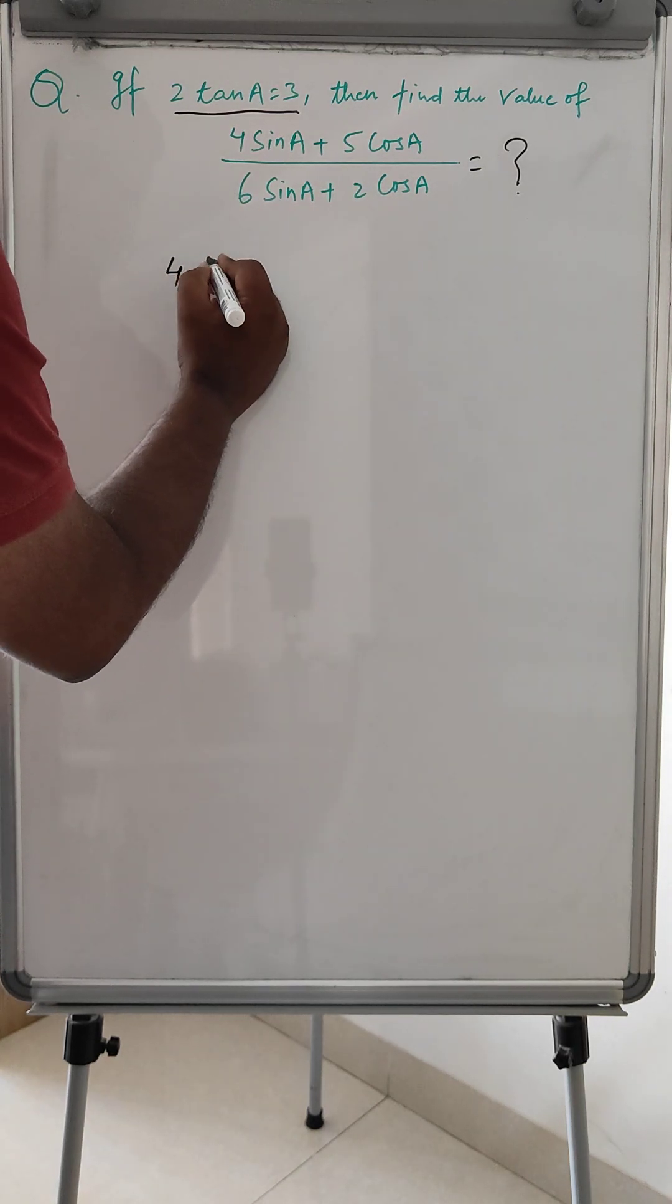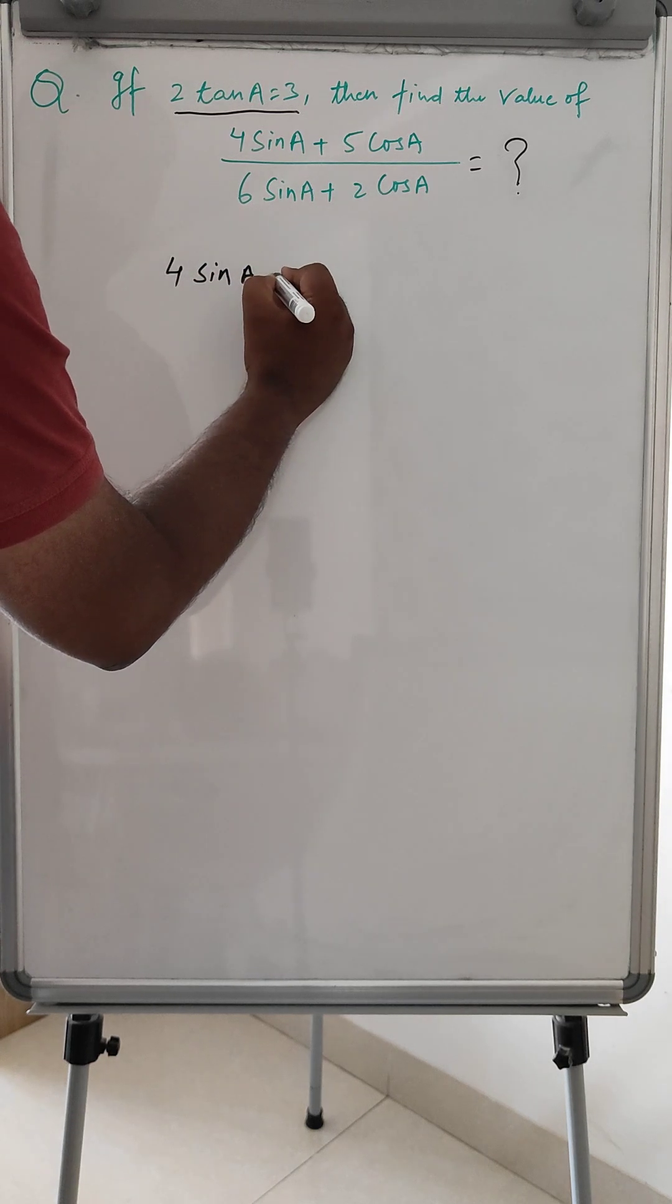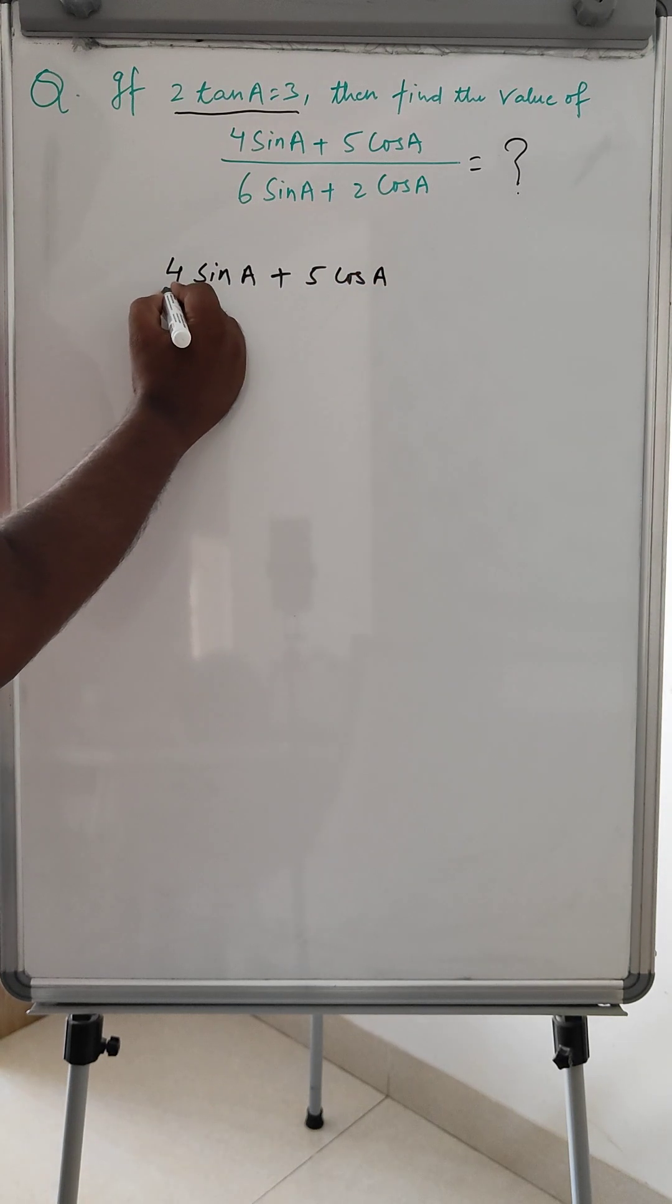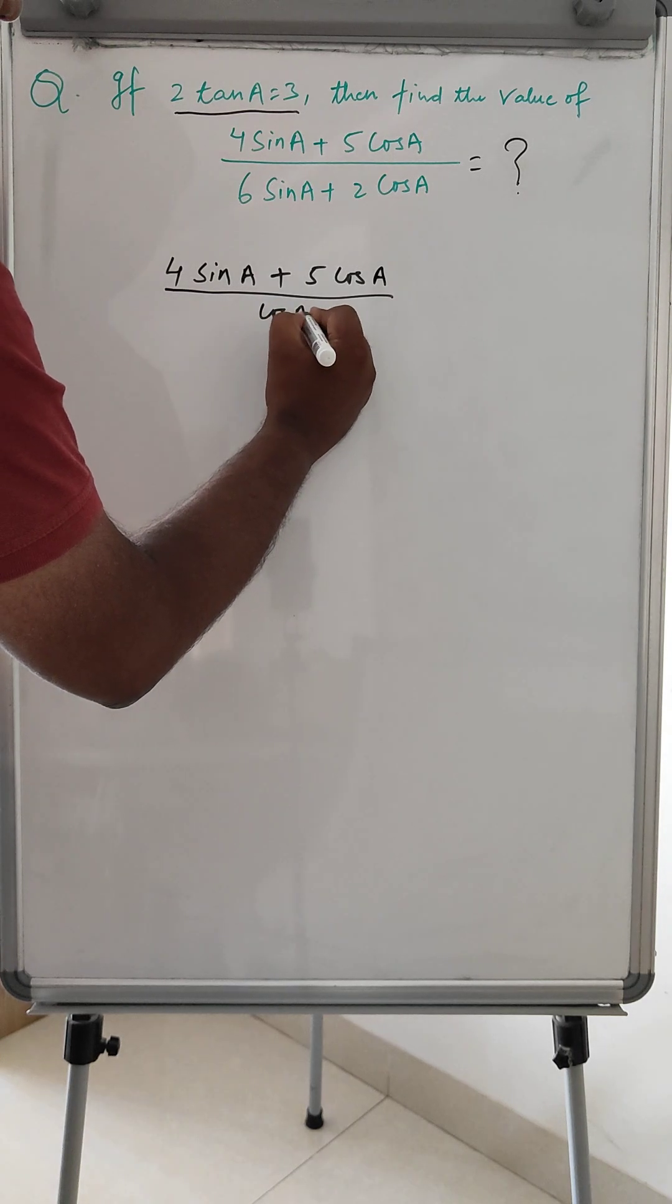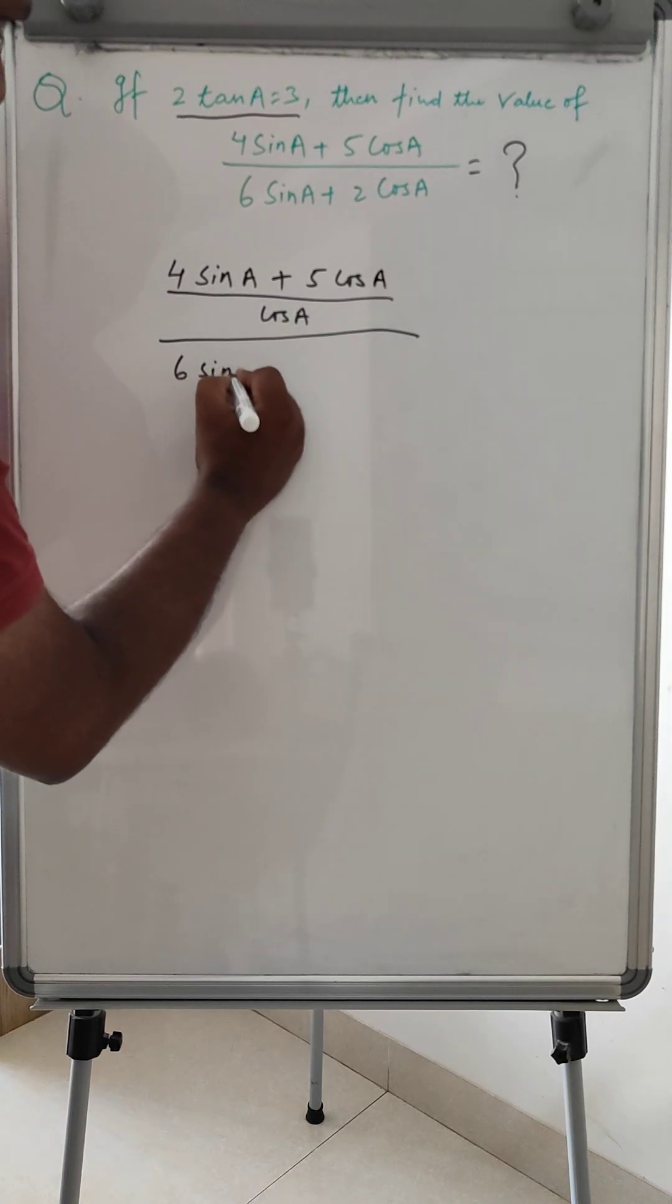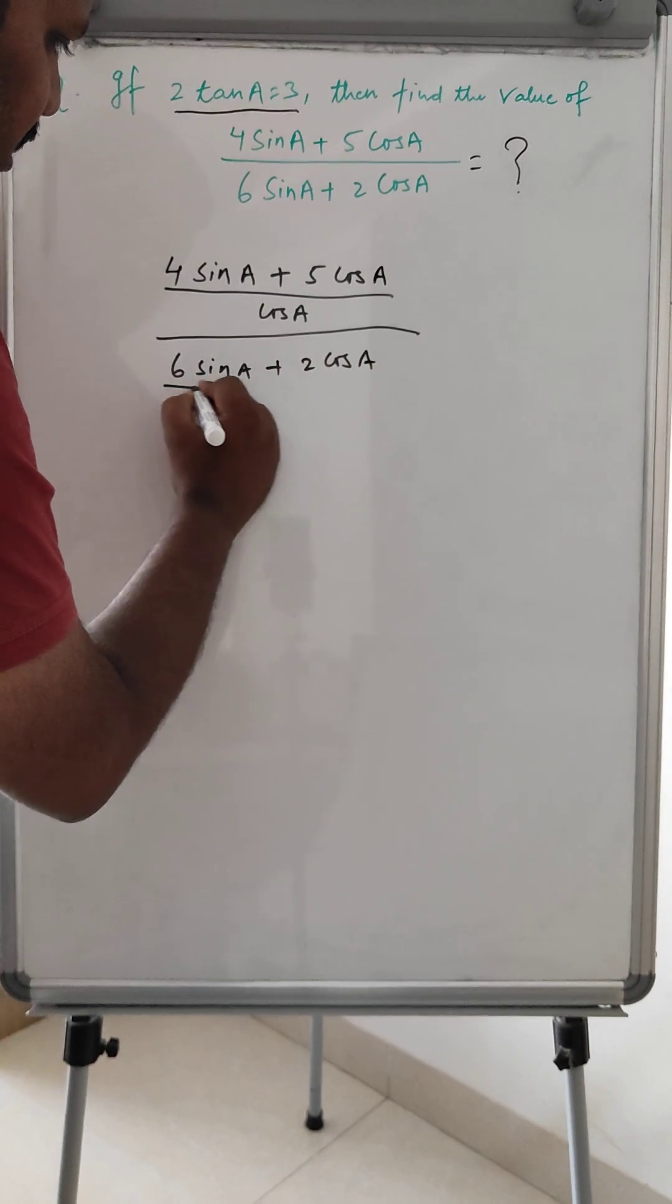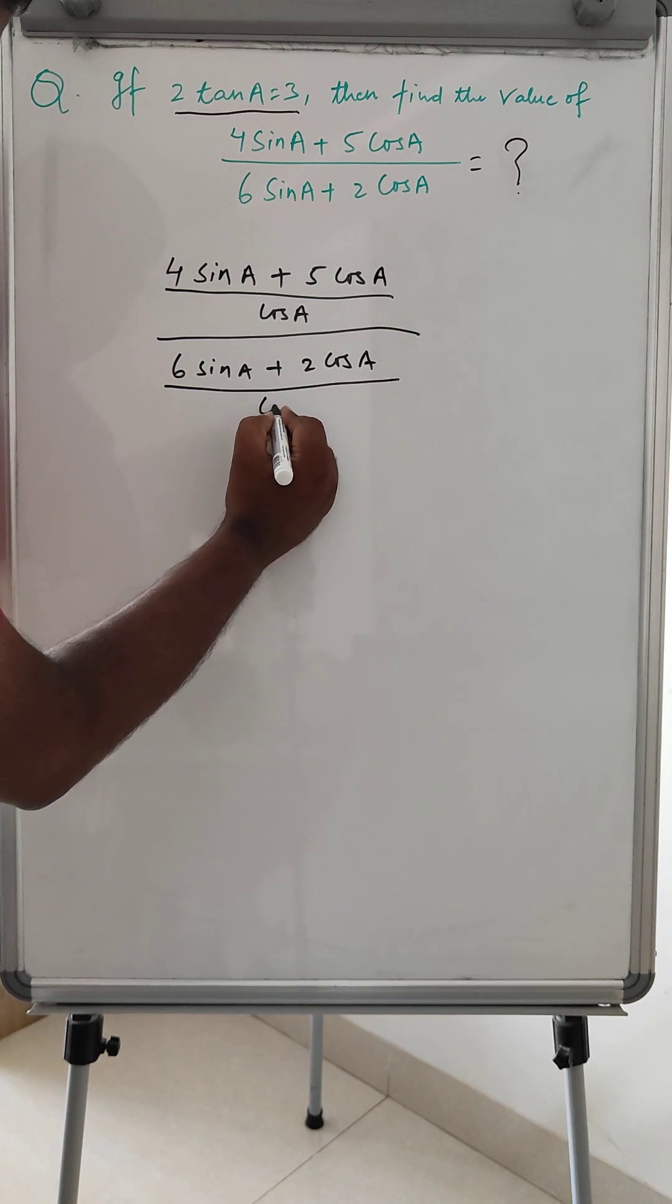Then 4 sin A plus 5 cos A, we can divide this by cos A. And again here in the denominator 6 sin A plus 2 cos A, we will also divide by cos A.